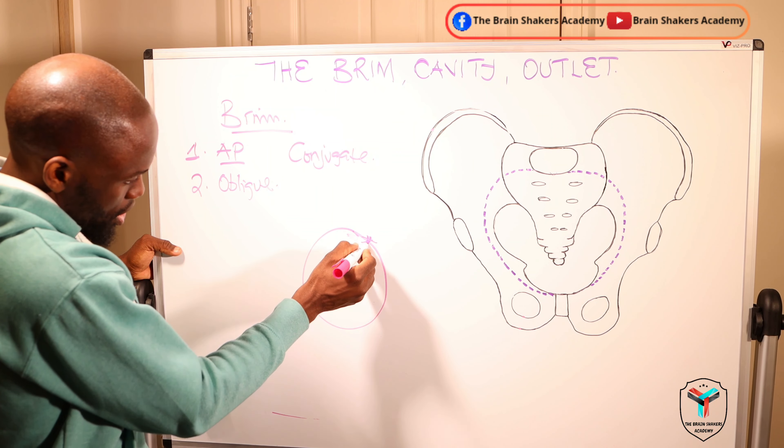That is the anteroposterior diameter of the pelvic brim. Now we have the oblique diameter, which moves from the sacroiliac joint to an area called the iliopectineal line on the opposite side. Moving from the sacroiliac joint to the opposite iliopectineal line gives us the left oblique. The same can happen moving from the right sacroiliac joint to the other side, giving us the right oblique diameter. Those are the oblique diameters of the pelvic brim, and they are usually about 12 centimeters.